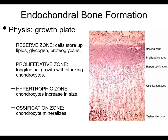Going from immature to mature cartilage through the growth plate: you have a resting or reserve zone where cells store lipids, glycogen, and proteoglycans. Then a proliferative zone where you have longitudinal growth and columnar stacking of chondrocytes. Then a hypertrophic zone where the chondrocytes increase in size. Then the zone of ossification, and finally your mature trabecular bone. That is the growth plate, or the physis.